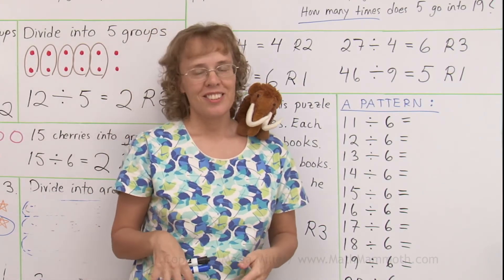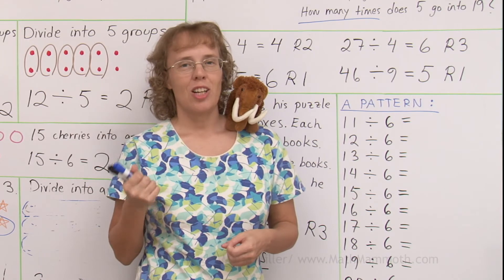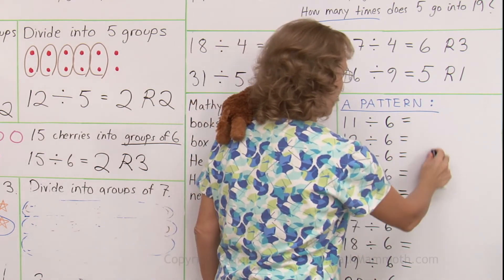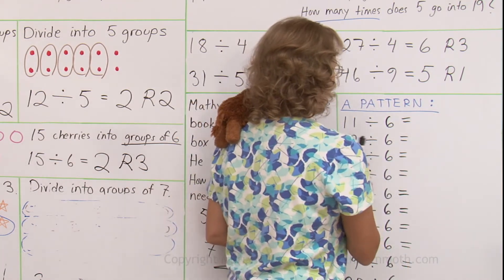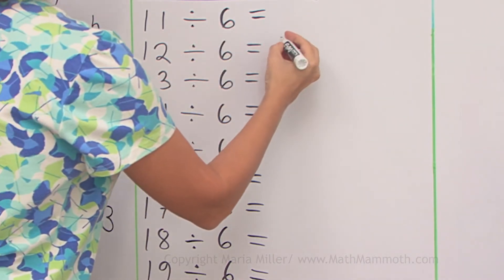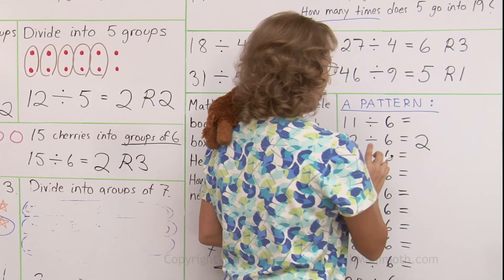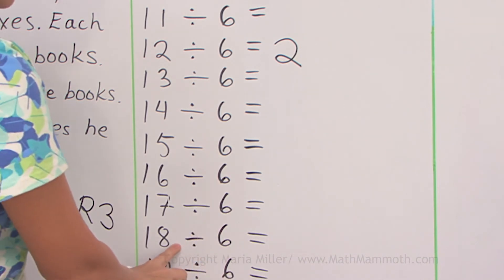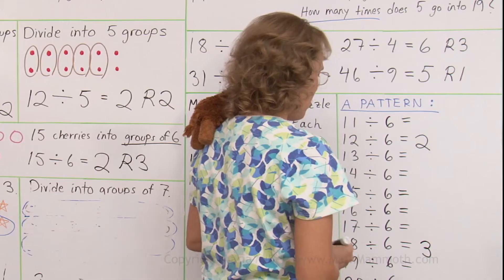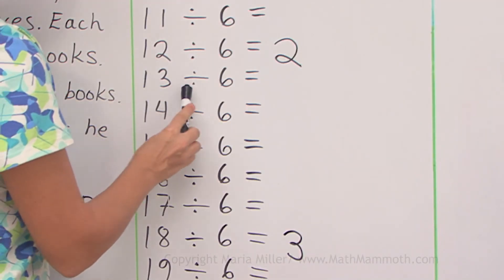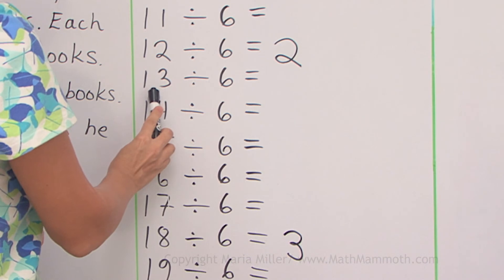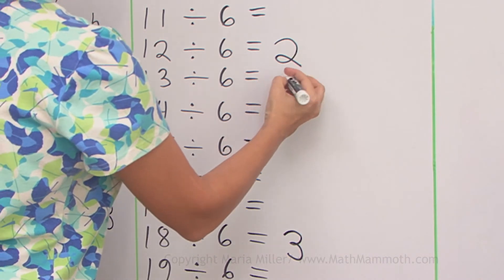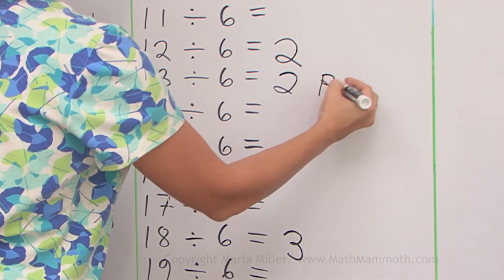Now we're going to look at a pattern — an easy pattern. Remember, mathematics is all about patterns. We're going to divide all these numbers by 6 and see what kind of pattern there is in the answers. Here's an easy one: 12 divided by 6 — that is an even division with no remainder. 18 divided by 6 is exactly 3, with no remainder. Now, 13 divided by 6 — just one more — if you have 13 items divided into groups of 6, you still get 2 groups, but now you have 1 left over. Remainder 1.